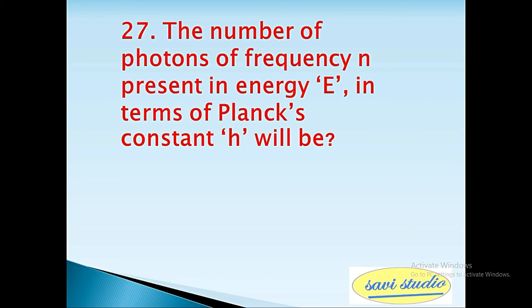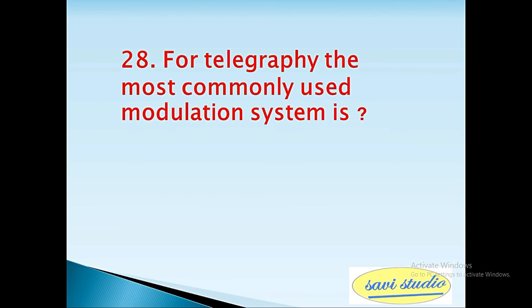27th question: The number of photons of frequency n present in energy E in terms of Planck's constant h will be? Answer: E by n h. 28th question: For telegraphy the most commonly used modulation system is? Answer: FSK, frequency shift keying.